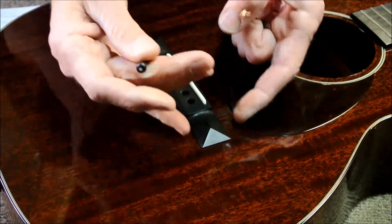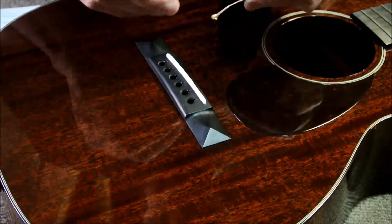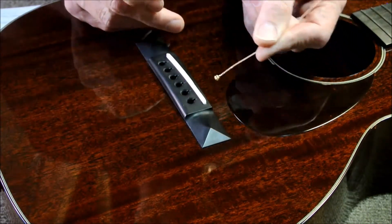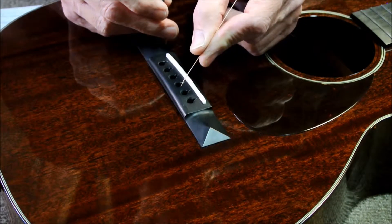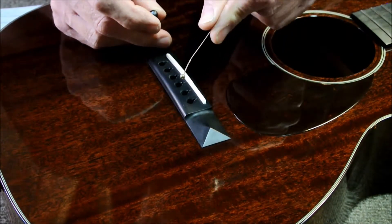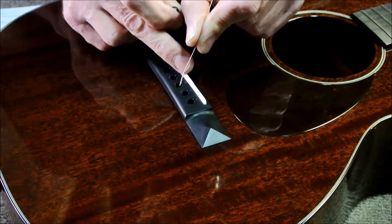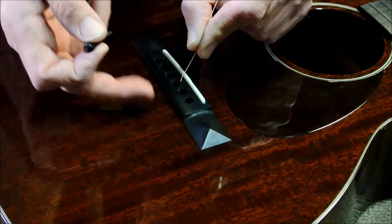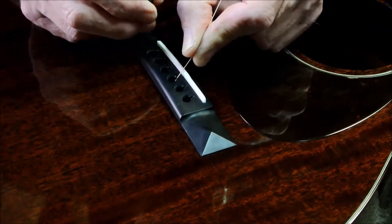Here's the trick: ball end of the acoustic string down into the slot there. So I usually put it in on a really slight angle like that so that the ball end goes past the soundboard of the guitar, and then I pull it back up a little bit, and I can actually feel that ball end coming up and contacting the bridge plate underneath. It's real easy to feel.